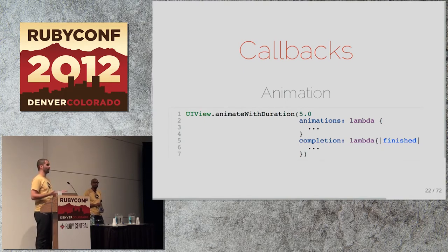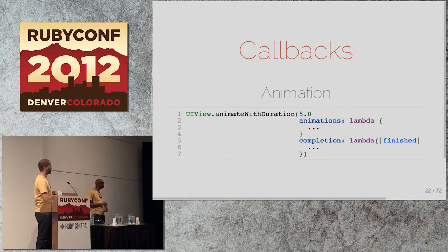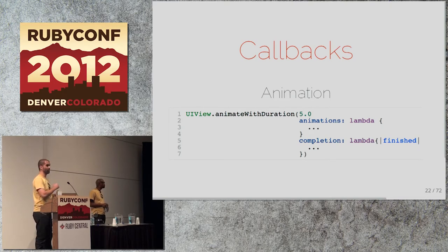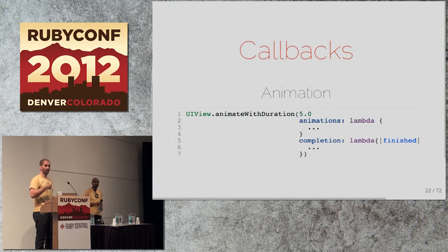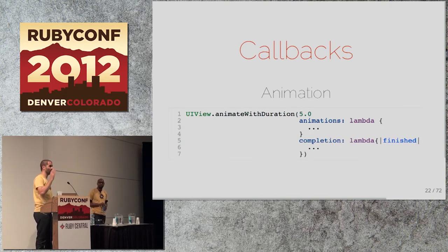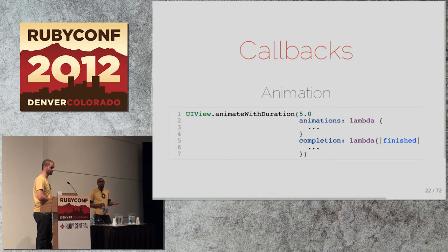RubyMotion makes use of Objective-C blocks by mapping Ruby blocks directly to Objective-C blocks. Here's an example using UIView's animation — you call 'animateWithDuration:animations:' and give it a lambda defining what you want the animations to be, then a completion lambda with a 'finished' flag. Much better than delegation. The times you still want to favor delegation are when you've got like 20 methods — you don't want to be passing 20 blocks into a method call.